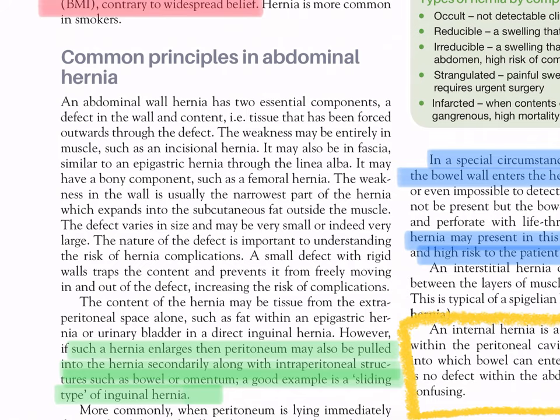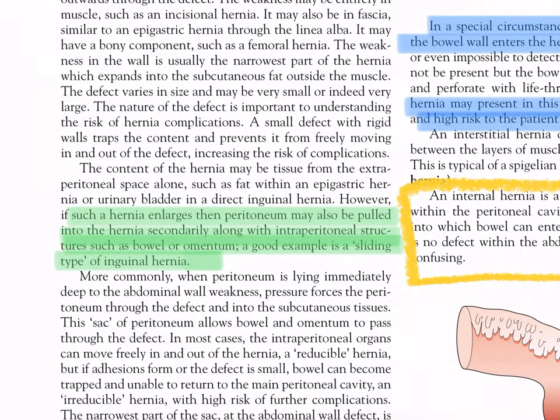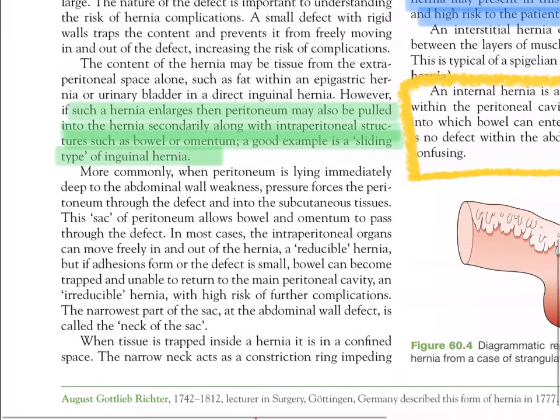The nature of the defect is important for understanding the risk of hernia complications. A small defect with rigid walls traps the content and prevents it from freely moving in and out, increasing the risk of complications. The content of a hernia may be extraperitoneal fat, such as in an epigastric hernia, or the urinary bladder in a direct inguinal hernia. If such a hernia enlarges, peritoneum and intraperitoneal structures such as bowel or omentum may also be pulled in — a good example is the sliding type of inguinal hernia.